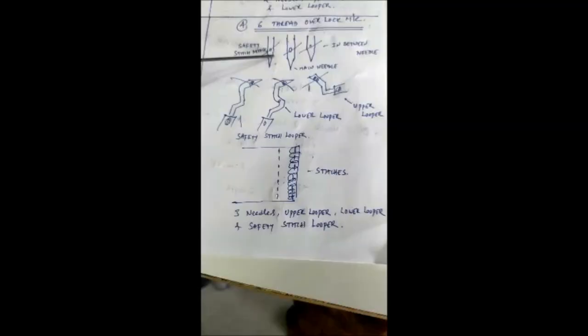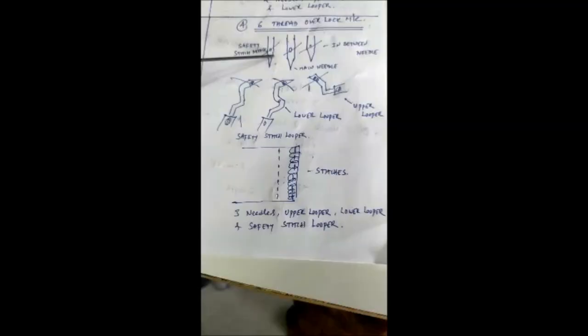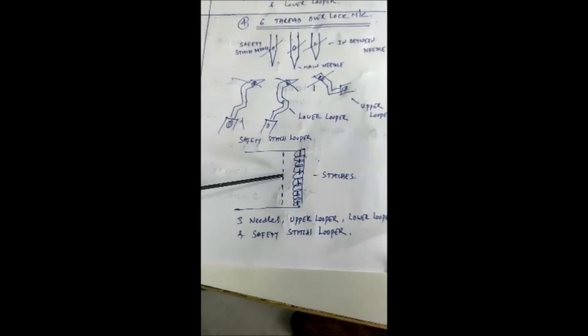This 6 thread overlock machine has 3 needle thread and 3 looper thread. Total 6 thread, we will get overlock stitches like this. In between center one stitches and side by one more stitches, safety stitches, all together we will get like this.